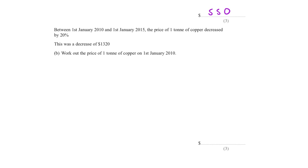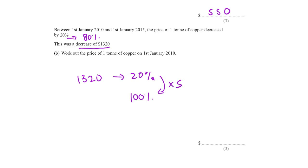Between 1st January 2010 and 1st January 2015, the price of one tonne of copper decreased by 20%. If there's a decrease of 20% we're finding 80%. But the question gives the decrease as 1,320, so 1,320 is equivalent to 20%. Since 20% goes into 100% five times, multiply 1,320 by 5 to get the original price of 6,600.